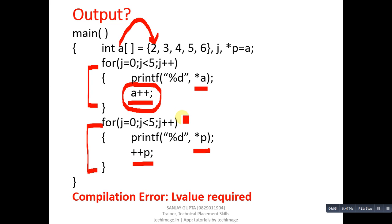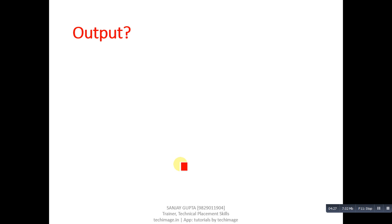Similarly, if we increase any pointer which is containing base address of any array, this statement is valid. It will not provide any kind of error. You cannot increase any array because it points to base address, but if we assign address of that array into a pointer, then we can increase its address.